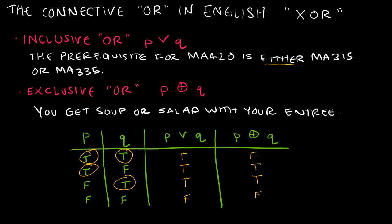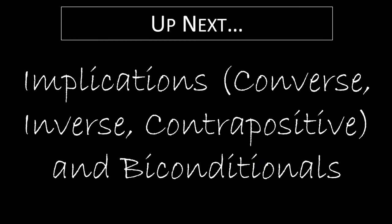Notice the different notation for XOR — it's basically just a circle with a plus sign in it. Up next, we're going to continue our study of the connectives by studying implications and biconditionals, and we're also going to look at the converse, inverse, and contrapositive of implications. Hope you can join me.